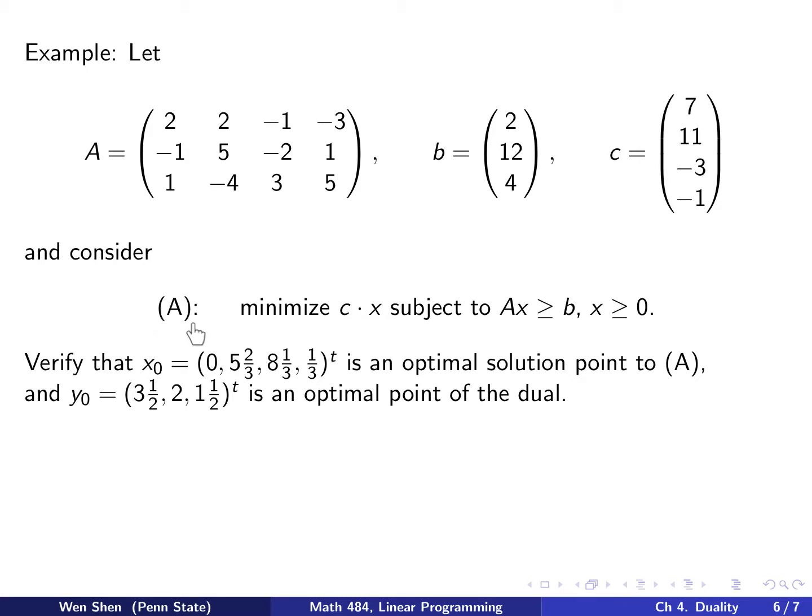I call the problem A. It says minimize c dot x subject to Ax greater than or equal to b, x greater than or equal to 0. That's a min form of a problem.